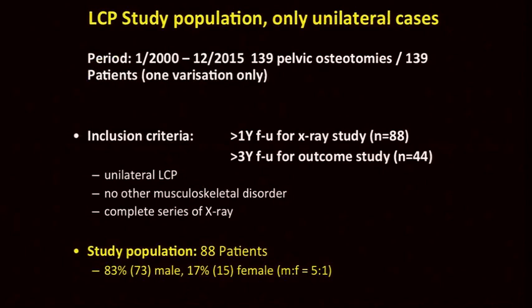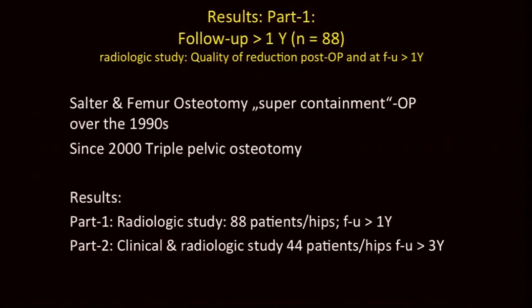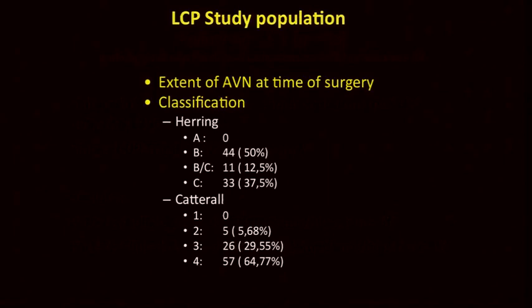Up to now we have close to 140 pelvic osteotomies in unilateral cases. The inclusion criteria for quality control is at least one year follow-up with all X-rays available, and the first outcomes I'd like to show have at least four years of follow-up — today that is 44 patients. The exclusion criteria is only unilateral cases, no other musculoskeletal disorder, and complete X-rays. Since 2000 we perform more and more triple pelvic osteotomies. This is the distribution of classification according to Herring and Catteral — the majority are severely involved patients.